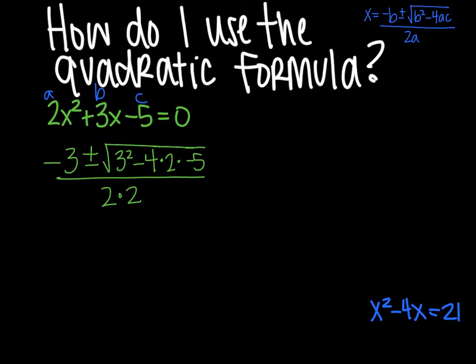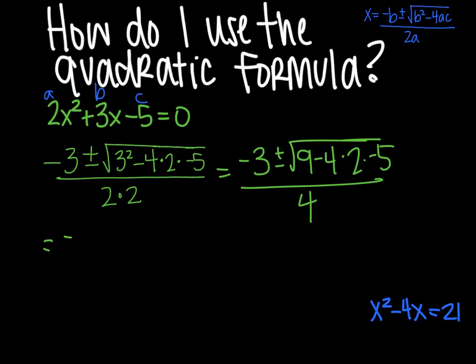And then we just kind of slowly simplify this. It does take a little bit of time to do but that's just the nature of the quadratic formula. So I now have negative 3 plus or minus the square root of 9 minus 4 times 2 times negative 5 all over 4. I can simplify that even more. Negative 3 plus or minus the square root, 4 times 2 is 8.